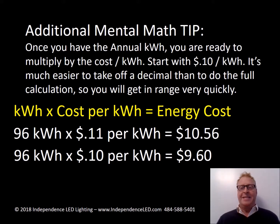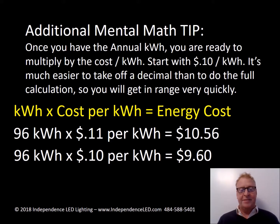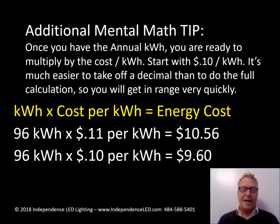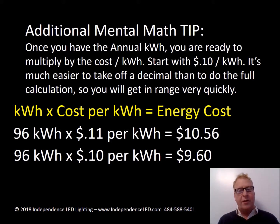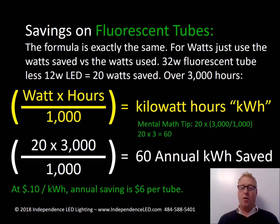The additional mental math tip also applies here: at 96 kilowatt hours and 11 cents, you get $10.56. If you use 10 cents, that's $9.60. Obviously when you write a full proposal you want to be precise, but using 10 as a quick round number works well. Think of the fluorescent tube as costing on average about $10 per year in a typical office.